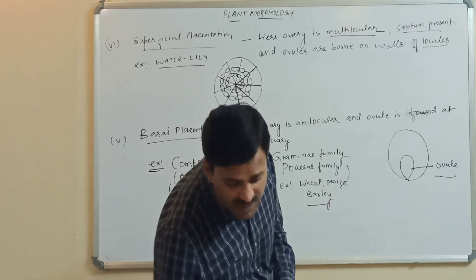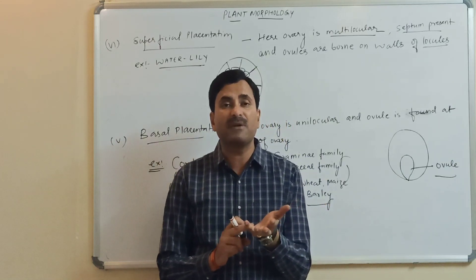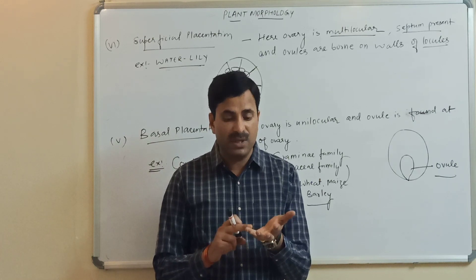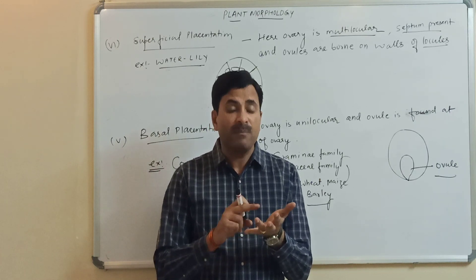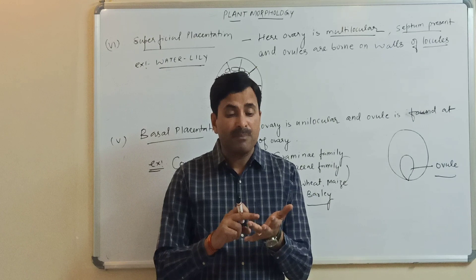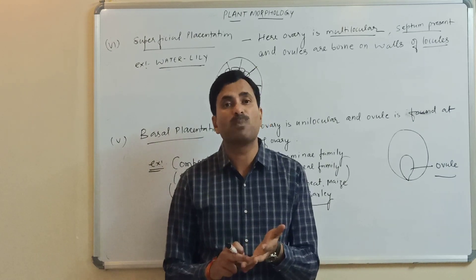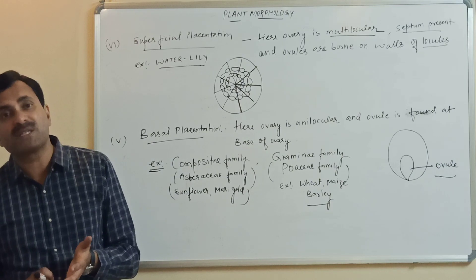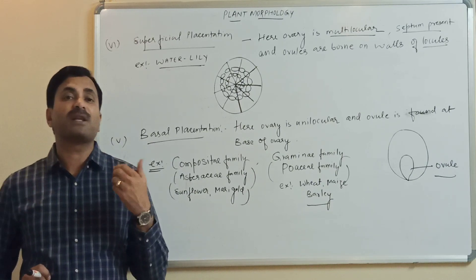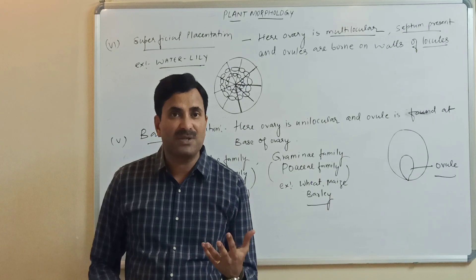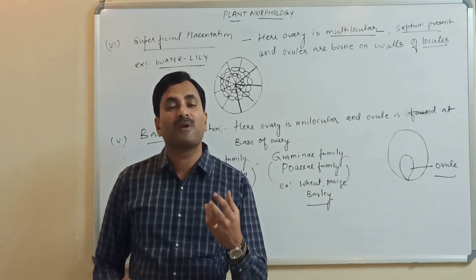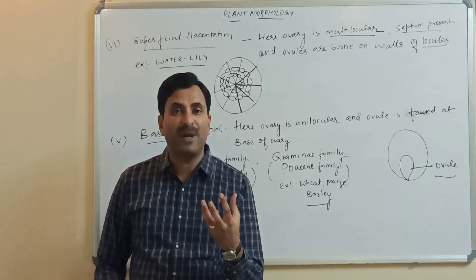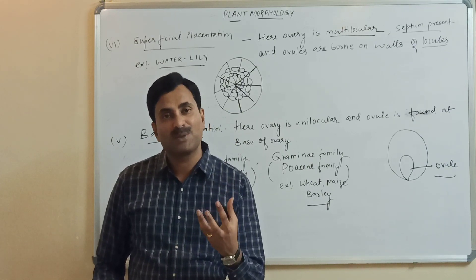So these are the six types of placentation. To recap: marginal placentation, axile placentation, parietal placentation, free central placentation, basal placentation, and superficial placentation. Today in this video we discussed what placenta is and the different types of placentation. In the coming videos we will discuss many more things regarding plant morphology. Thanks a lot.